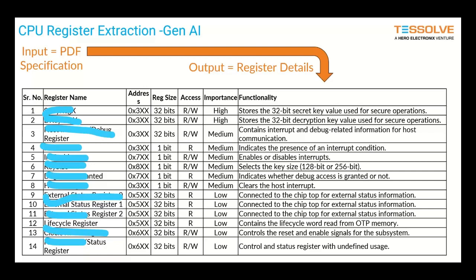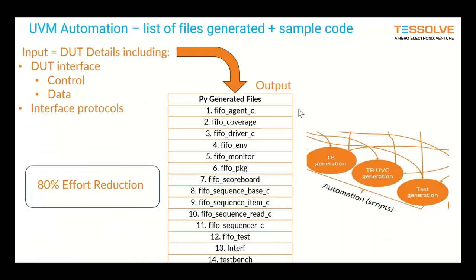On one of our customer designs — most of which has to be obscured — again from just a PDF specification, we extracted all the register details and the functionality of those registers. This can then go on to start building coverage models and our RAL model as well. All of that was generated from the input PDF. We can now generate this type of information automatically.